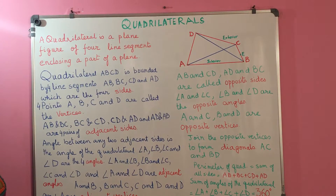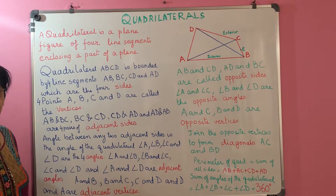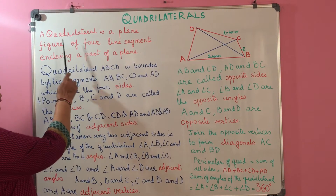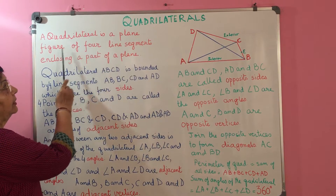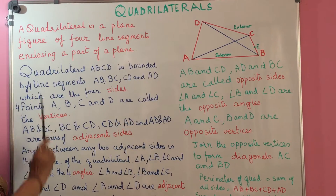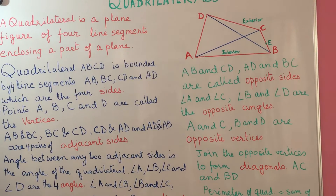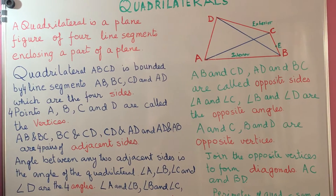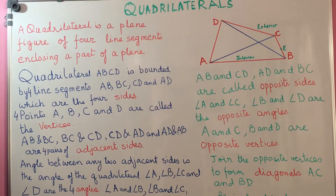Let us learn about quadrilaterals today. A quadrilateral is a plane figure consisting of four line segments which enclose a part of a plane.